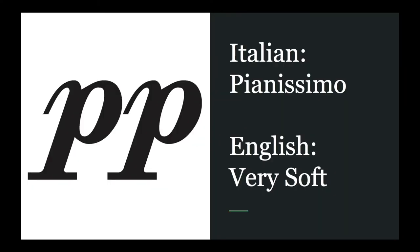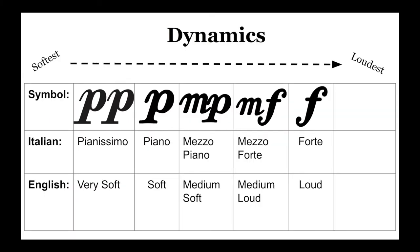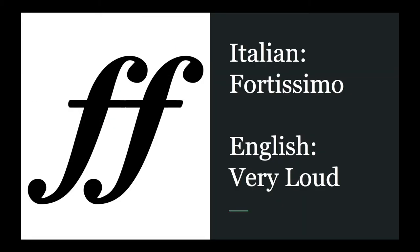Here we have the symbol of two P's. In Italian, this stands for pianissimo. The -issimo adds a 'very' to it, so this means very soft. Pianissimo is softer than piano. Though pianissimo is shown as our softest dynamic marking, we could actually have softer markings with three P's, pianississimo, or four P's or more, but those are less common. Just like pianissimo, we have two F's, which is fortissimo.